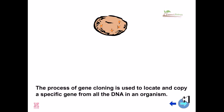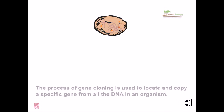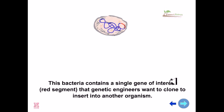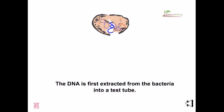The process of gene cloning is used to locate and copy a specific gene from all the DNA in an organism. This bacteria contains a single gene of interest, shown here in red. The genetic engineers want to clone this part and insert it into another organism.